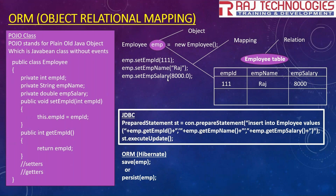In ORM, there is one important concept called the POJO class. POJO stands for Plain Old Java Object, which is a Java Bean class without events. A Java Bean class is a public class with private properties, and for every property we should have setter and getter methods. A POJO class is a plain class with private properties, constructor, setter and getter methods, and a toString method.